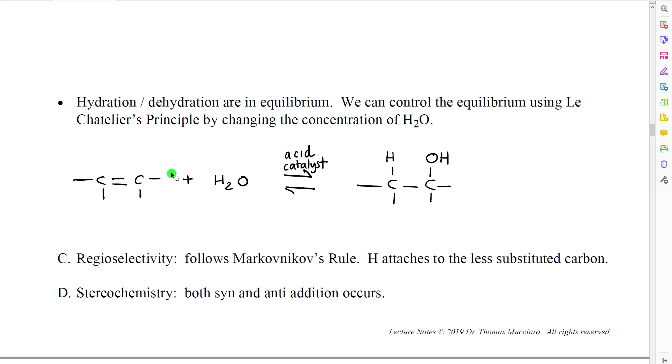The other two elements of this would be the regioselectivity. Because the hydrogen is acting as an electrophile, it's going to follow Markovnikov's rule. Hydrogen will attach to the less substituted carbon so that we produce the more stable carbocation intermediate.